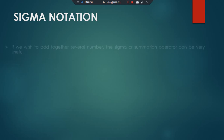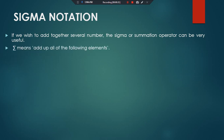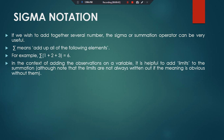Sigma notation: if we wish to add together several numbers, the sigma or summation operator can be very useful. Summation means add up all of the following elements. For example, the summation of one plus two plus three equals six. This is the summation of three numbers. In the context of adding observations on a variable, it is helpful to add limits to the summation.